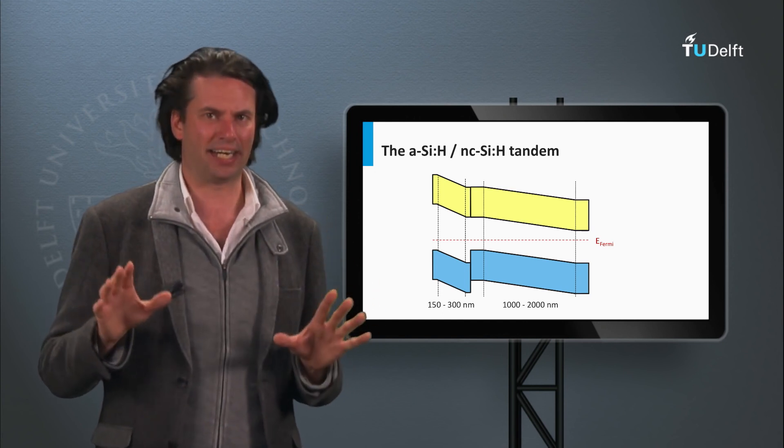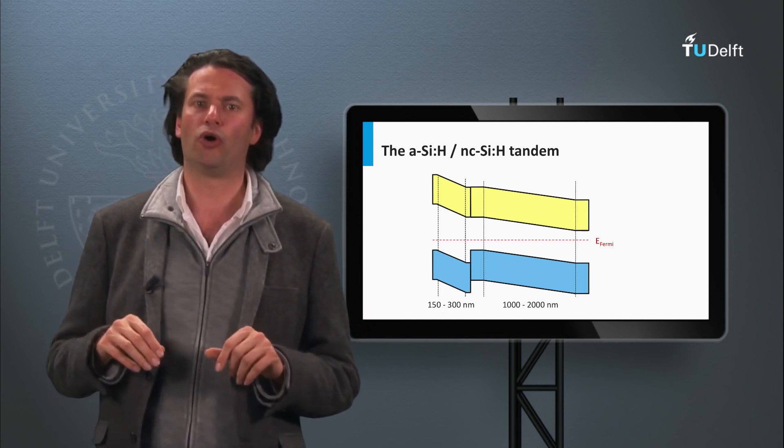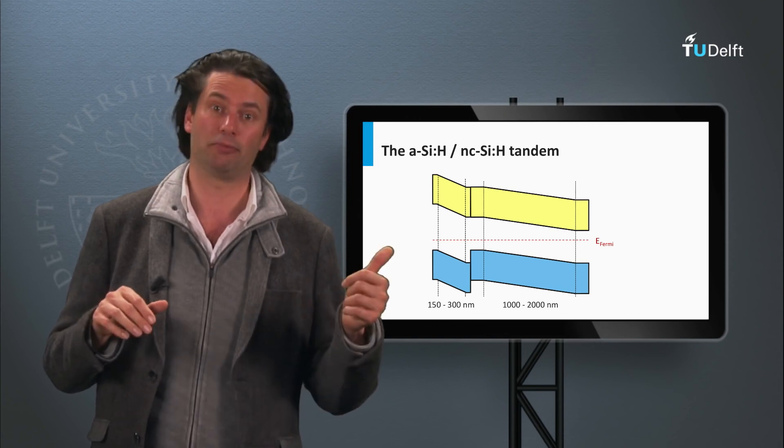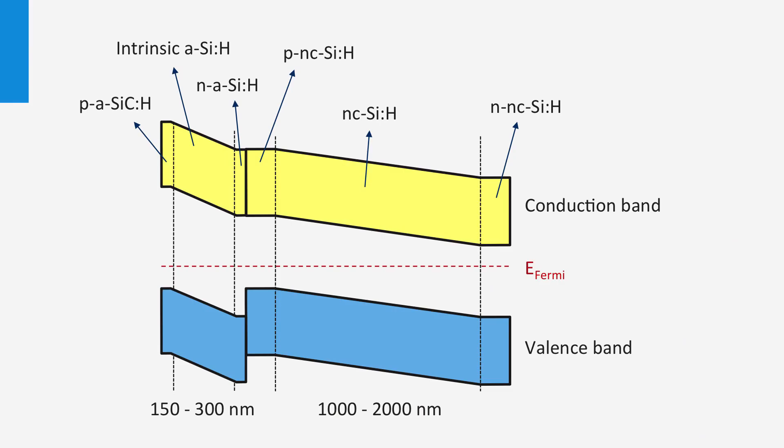Let's look at a typical band diagram of such a double junction, or also referred to as a tandem cell. On the left, the electronic band diagram of the amorphous silicon top cell is shown, and on the right, the electronic band diagram of nanocrystalline silicon bottom cell is shown.